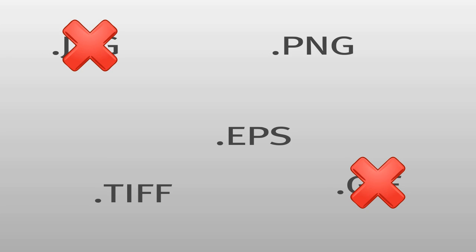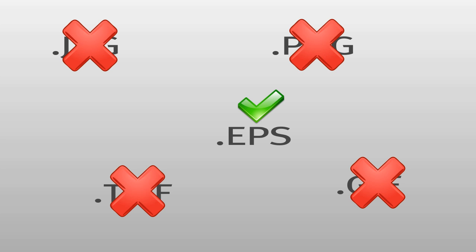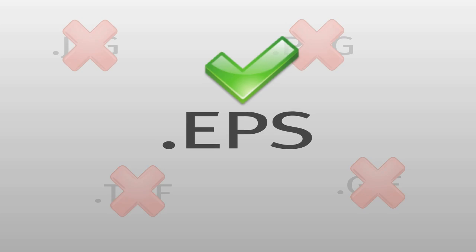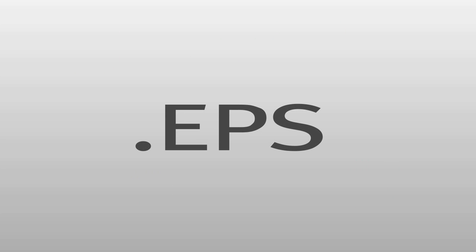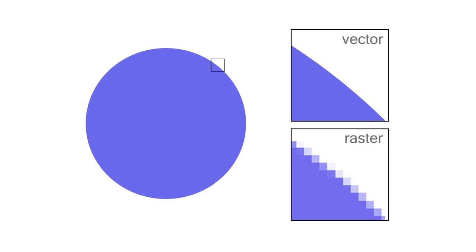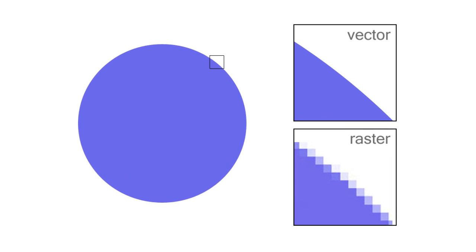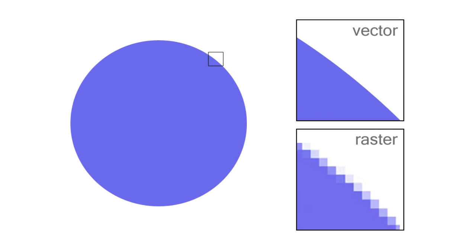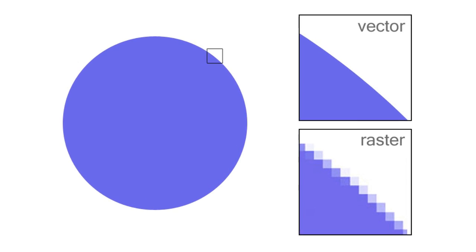If you chose EPS, congratulations — you are right! The reason we want EPS is because it is a vector file. What vector means is that it's not pixel-based but it's based on geometric primitives. So you can scale that logo any size. You can make it super small, you can make it really, really big, and you'll never lose quality.